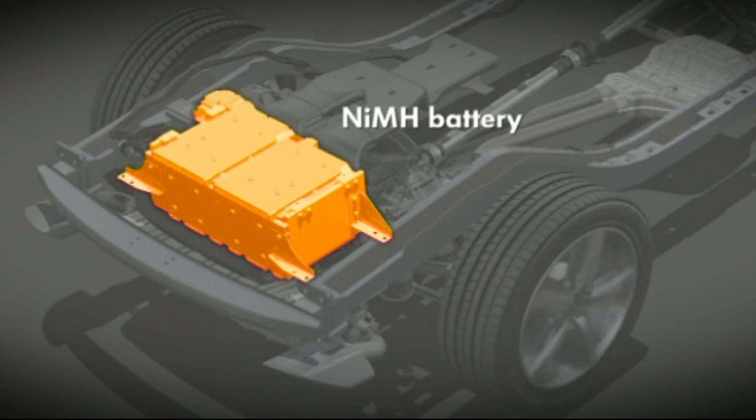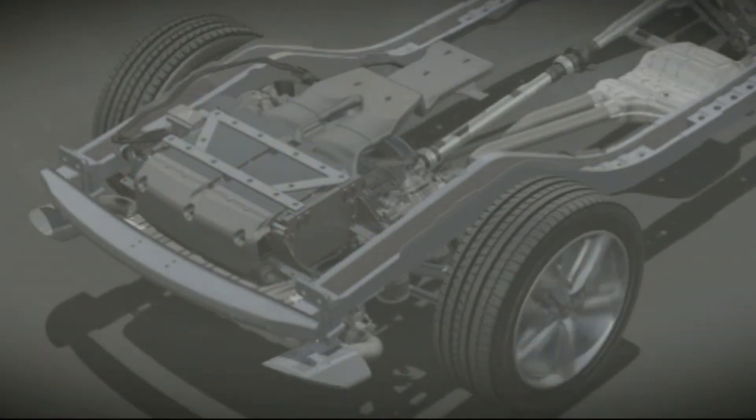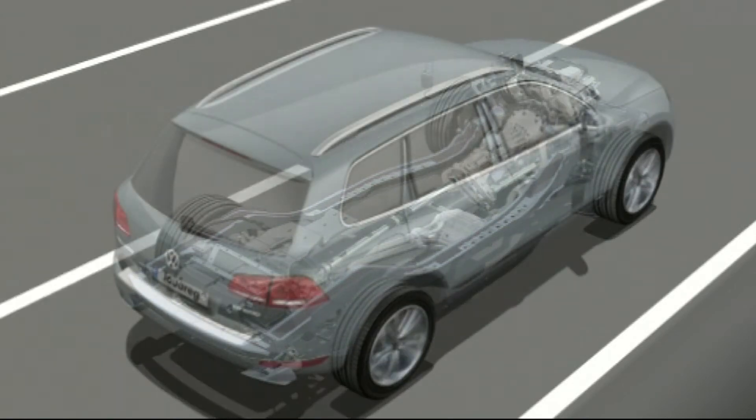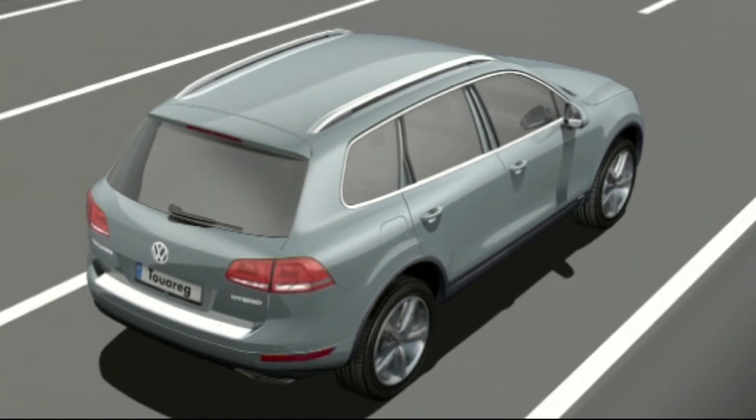When the driver brakes, the kinetic energy is recovered and stored here. The hybrid drive system is perfect because you hardly notice it. All the components for both types of drive are perfectly coordinated. The Touareg always selects the most economical form of propulsion.